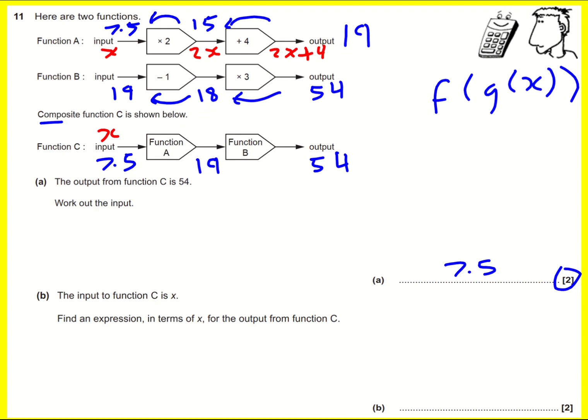So now, at this point, I've got 2x plus 4. Then I'm going to put it into function B. Up here, 2x plus 4. If I minus 1, I'm going to get 2x plus 3. And then if I times by 3,